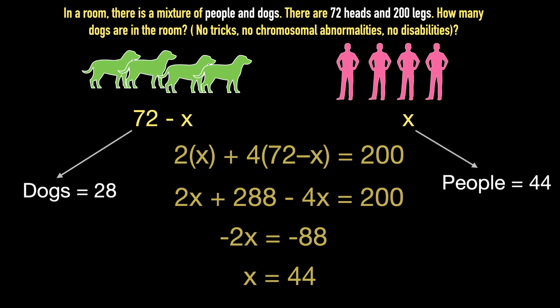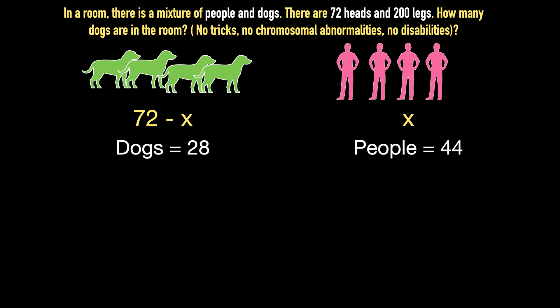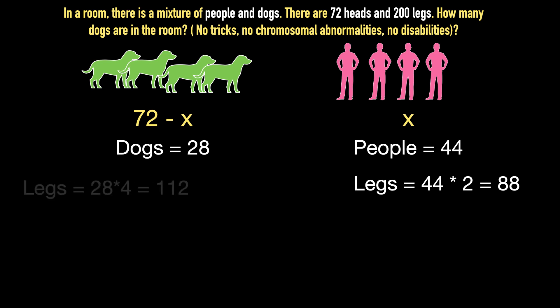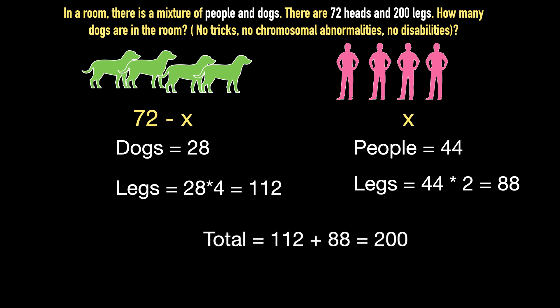Let's validate the answer and check if it works. There are 44 people, and hence the number of human legs is 44 times 2, which equals 88 legs. There are 28 dogs, and hence the number of dog legs is 28 times 4, which equals 112 legs. Adding human and dog legs: 88 plus 112 equals 200 legs. And thus the answer is validated.